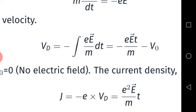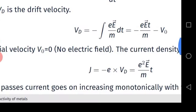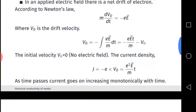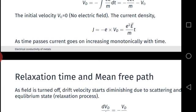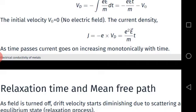The integration constant is the initial velocity, which is zero in the absence of an electric field, so we neglect it. The current density is charge times drift velocity: minus e times v_d, giving j equals e²Et/m. From this formula, the current builds up as time passes, increasing monotonically. This would go to infinity, but we know that a finite electric field always produces a finite current — so we are missing something.